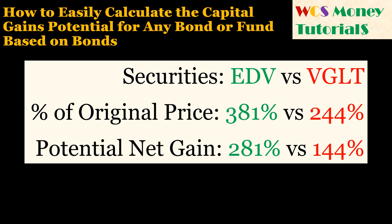In my previous video on duration, I showed how to pick bonds or funds based on bonds that have the greatest potential for capital gains by selecting the securities that have the longest duration. In doing that video, I realized that there was a simple way to calculate the potential for capital gains, so I will show you how to do that in this video.